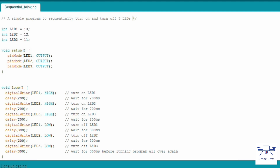The program first creates three variables: LED1, LED2, and LED3. This allows us to change the output pins without having to modify the entire program.